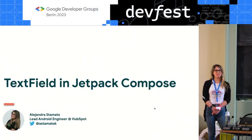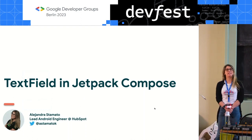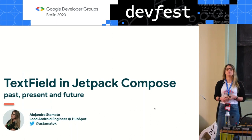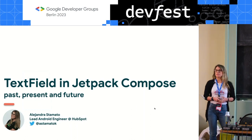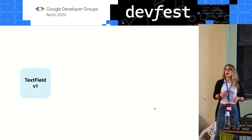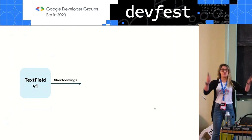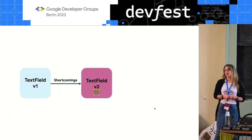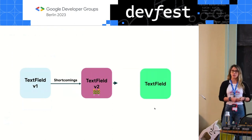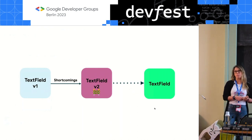Hi everyone, thank you for coming. Great to connect with my fellow Android developers and other Google tech enthusiasts. I'm Alejandra Zamato, Lead Android Engineer at HubSpot. In this talk, we're going to be talking about the text field APIs in Jetpack Compose — specifically a quick recap of the current state of the text field API, how its shortcomings led to rethinking how we build text fields with a new API called text field v2, and what the future of this API looks like.